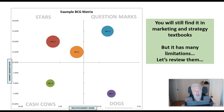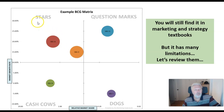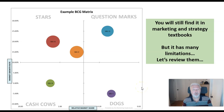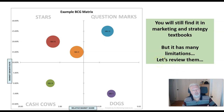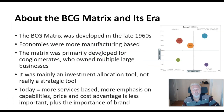The BCG matrix looks something like this where you plot various portfolios and you have quadrants known as stars, question marks, cash cows, and dogs. You'll find this particular model or matrix in a lot of textbooks still, even though it was developed a long time ago, and as a result it has quite a few limitations.